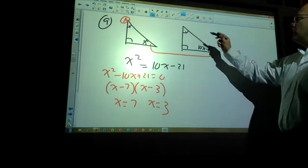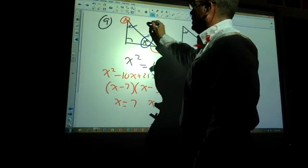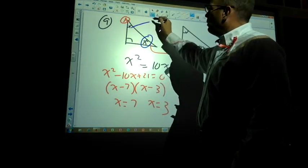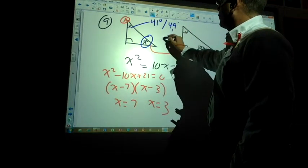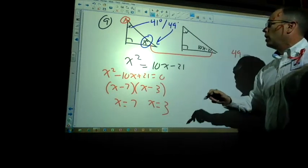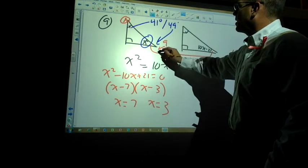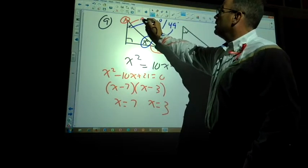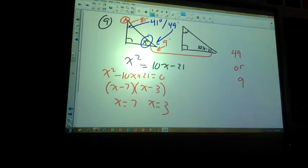So that means that angle x, if we made this angle here 49, that would have to mean that that angle there would have to be 41. Or if it was 9 degrees, then that means that this angle would have to be 81. So it's either 81 or 41 degrees, depending upon which solution would work.